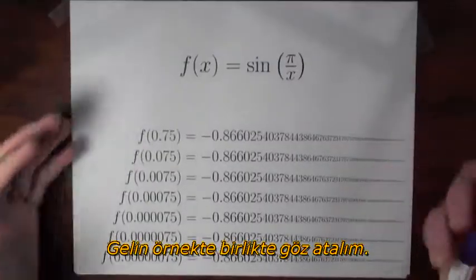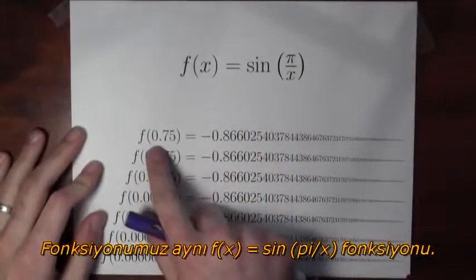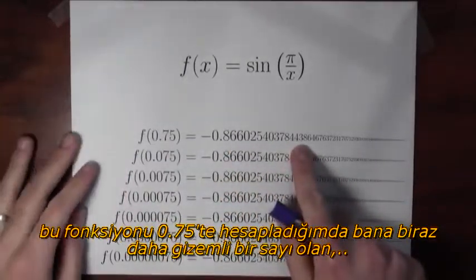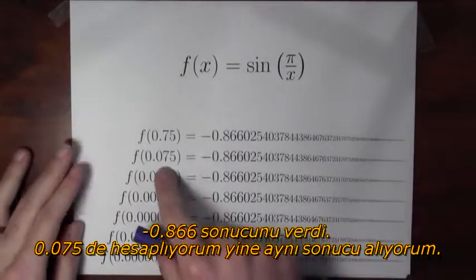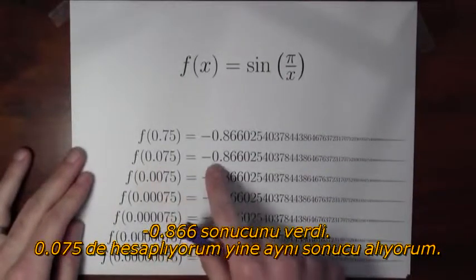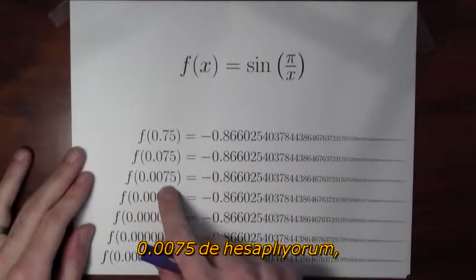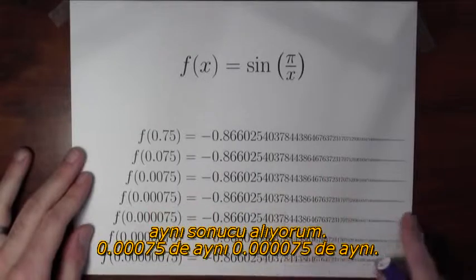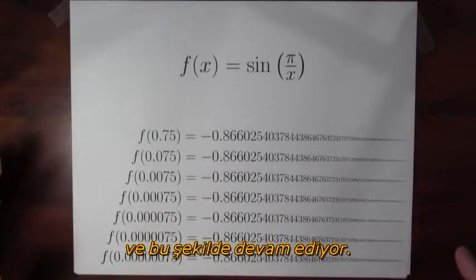Well, take a look at this example. Here's the same function, f(x) = sin(π/x). This function, if I evaluate it at 0.75, is this maybe a little bit mysterious number, negative 0.866 and so forth. If I evaluate this function at 0.075, I get the same thing. If I evaluate the function at 0.0075, I get the same thing. At 0.00075, I get the same thing. 0.000075, I get the same thing. So what's going on here?